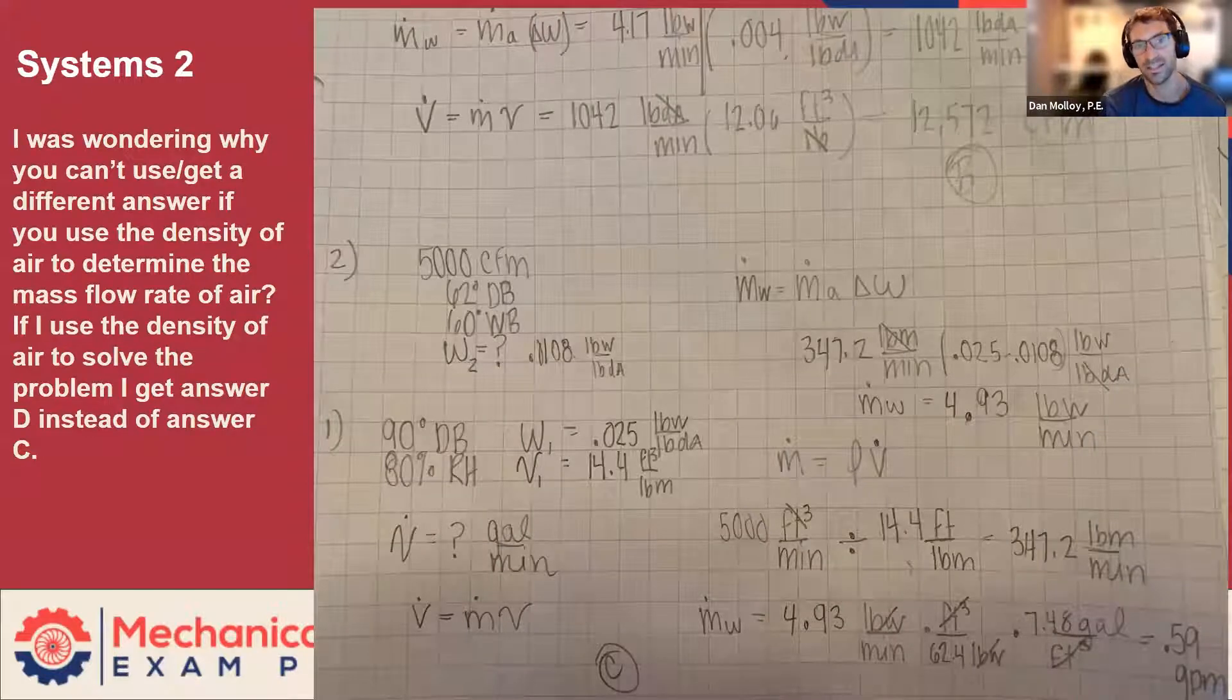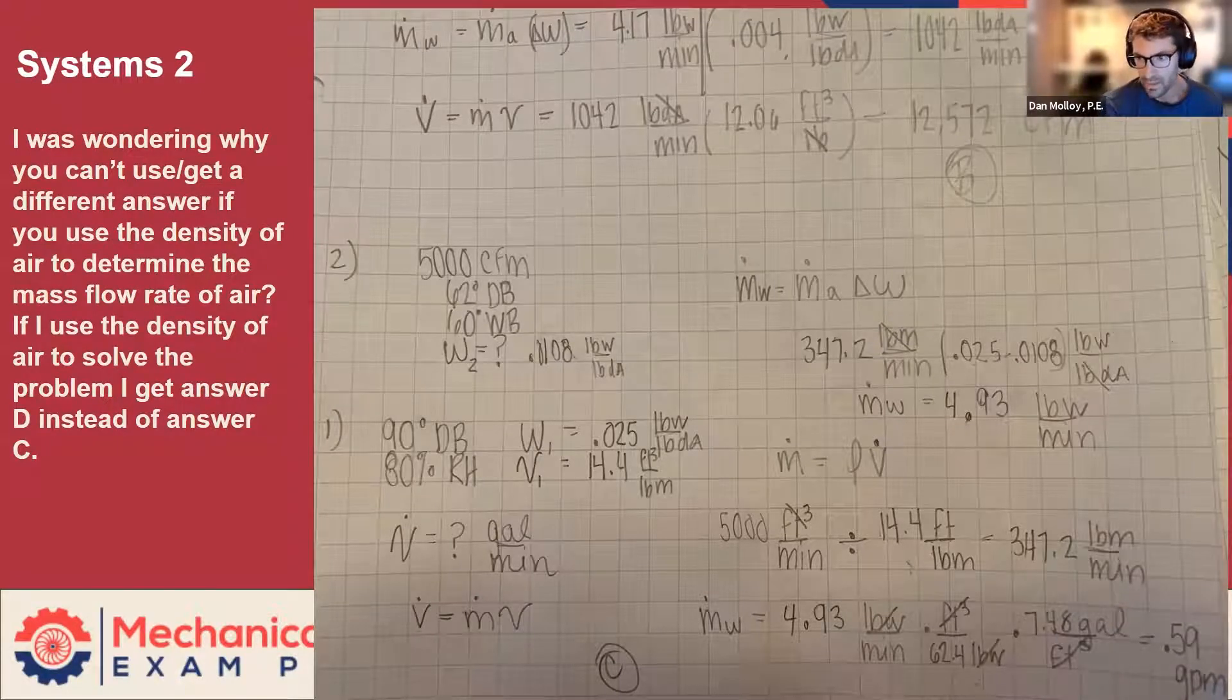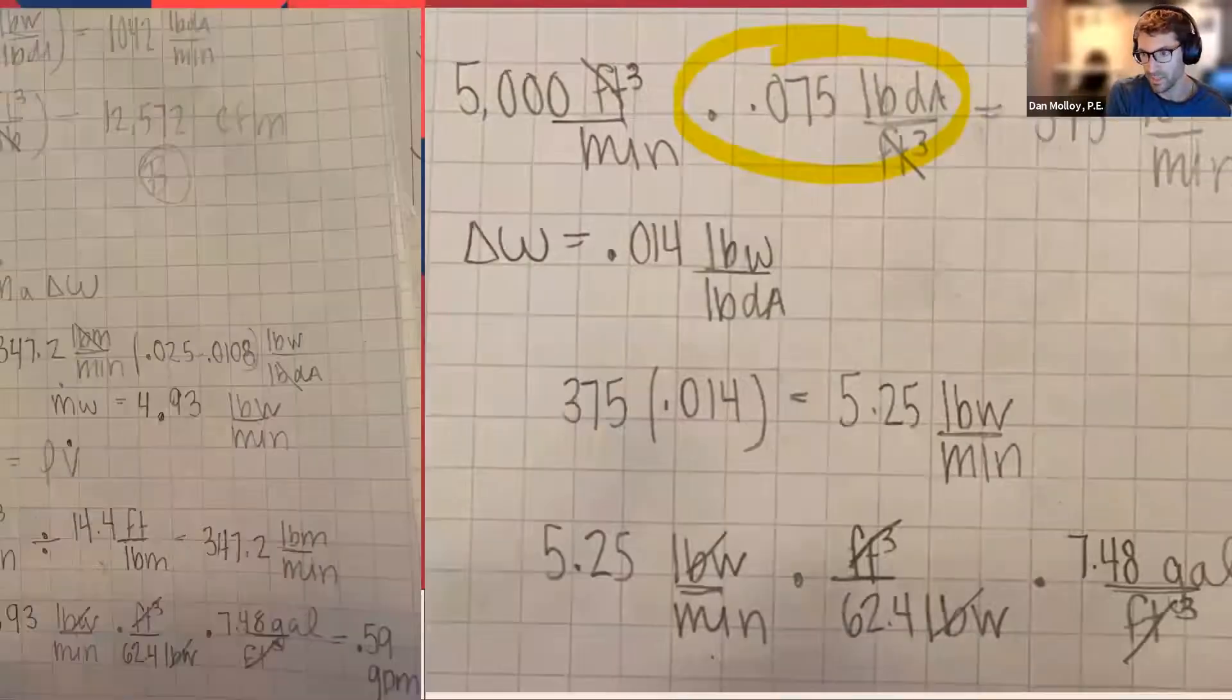So this is the other density example to kind of circle back to the one we were looking at earlier. Here, this is the correct version. There's two slides here, so you can come at it two ways.